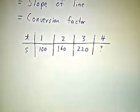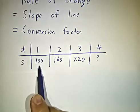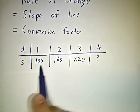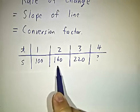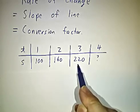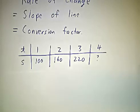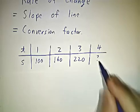Let's suppose you're driving down the road, and at 1 o'clock, you reach mile marker 100. And at 2 o'clock, you reach mile marker 160. And at 3 o'clock, you reach mile marker 220. And let's suppose that you're moving with constant speed. How fast are you moving? And where will you be at 4 o'clock?